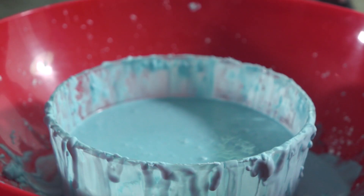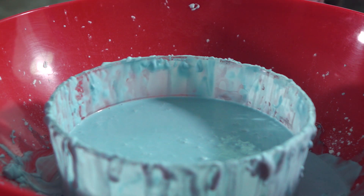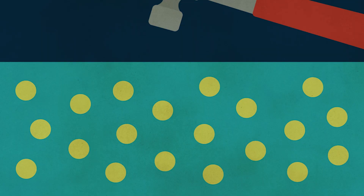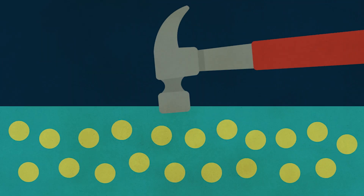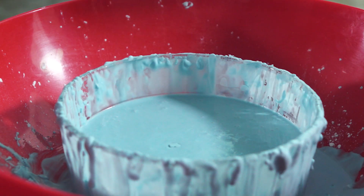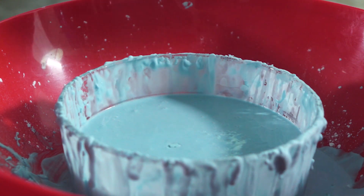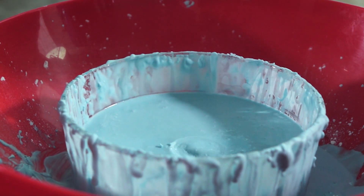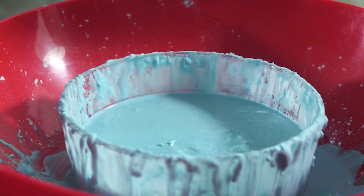the water helps the cornstarch particles slip around each other like a liquid. But when we hit the oobleck with a hammer, the water flows away too fast to carry the cornstarch with it, and the solid cornstarch particles push against one another and resist whatever force we apply the way solids do. So as weird as it appears, oobleck responds exactly the way we'd expect when we look closely.